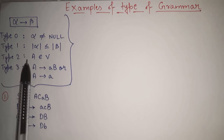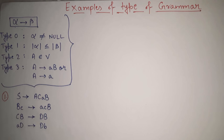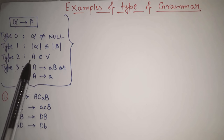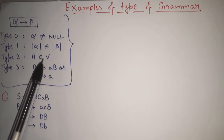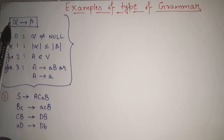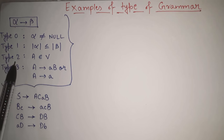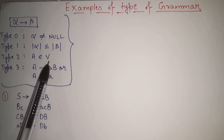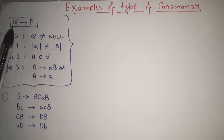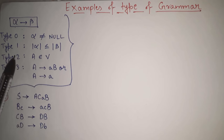The main condition of type 2 is that alpha must always belong to one variable. That means in type 0 and type 1, the LHS or alpha can be a combination of both variables and terminals. But in type 2, the LHS must contain only one variable — no other possibilities. So the alpha part or the LHS part must always contain one and only one variable in case of type 2.